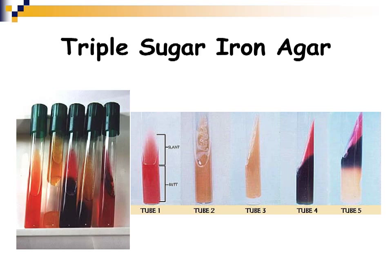Clinical microbiology laboratories now use instruments to perform many different tests on an organism inside the instrument, giving a genus and species result. In the past, you had to inoculate many different agar media and slants to determine organism identity. Now it's done by instruments, but it's still very important to understand what tests the instrument is performing, what the results mean, and why it arrives at a given genus and species.